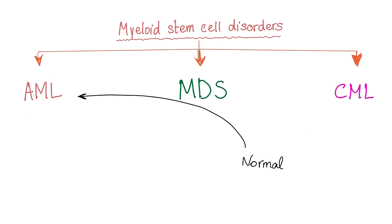Here is a summary of your myeloid stem cell disorders. As you know, your bone marrow has myeloid lineage and lymphoid lineage. The myeloid stem cell disorders include AML, MDS, and CML. Remember, MDS can progress towards leukemia.